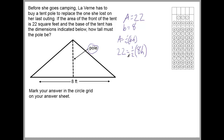Now we solve for H. The first thing we want to do is get rid of this half. Because we want to isolate H — get H on one side of the equal sign all by itself — the way you get rid of this half is by dividing, since it's right next to the parenthesis, which means they're multiplying each other. So you divide by half on this side to get rid of it, and then divide by half on the other side to balance it out.